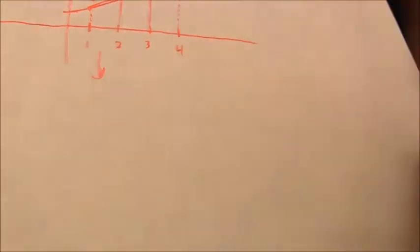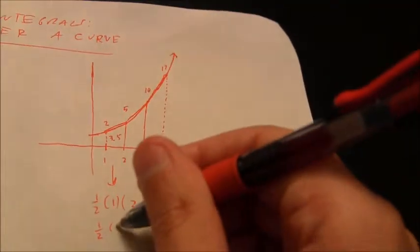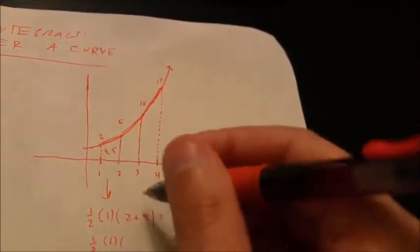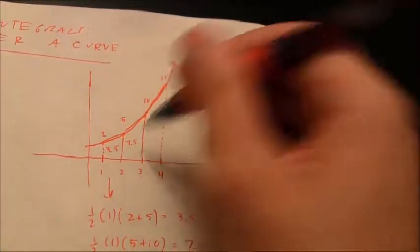For the first trapezoid, its area is half the height, which is 1, times the sum of its bases — the base lengths are 2 and 5. Half of 7 is 3.5, so that's the area of the first trapezoid. For the second trapezoid, I have base lengths of 5 and 10. Half the height times the sum of the bases: half of 15 is 7.5.